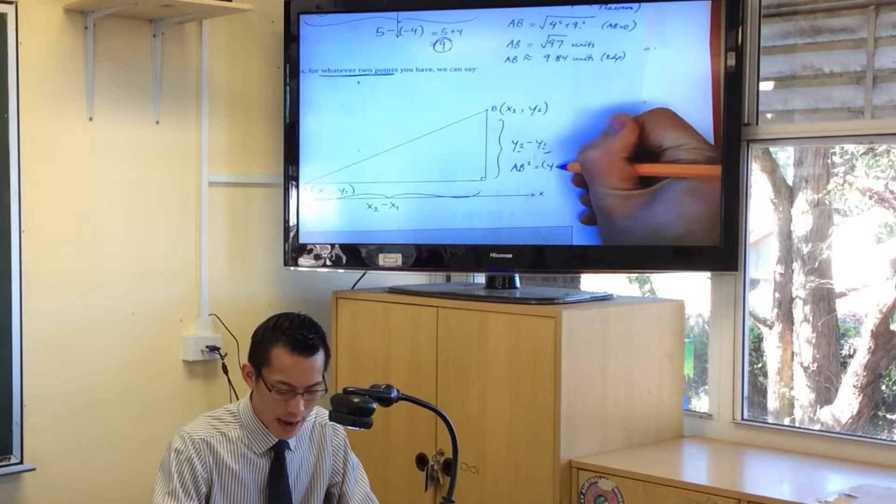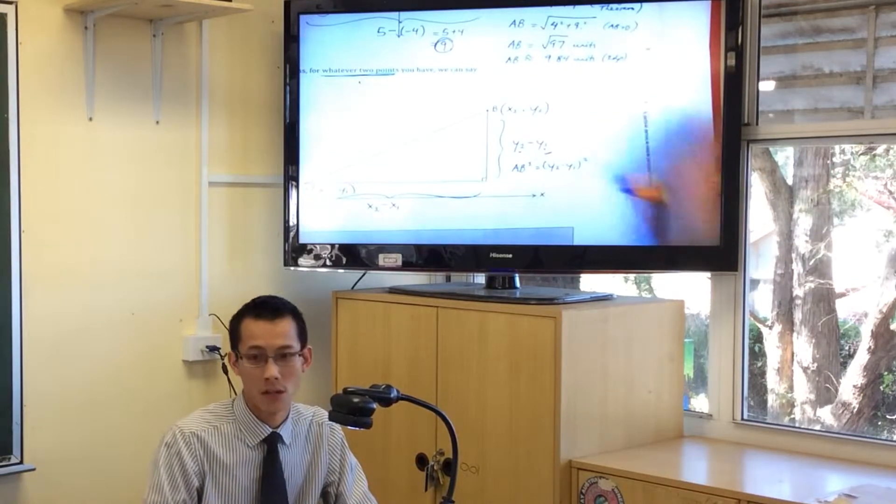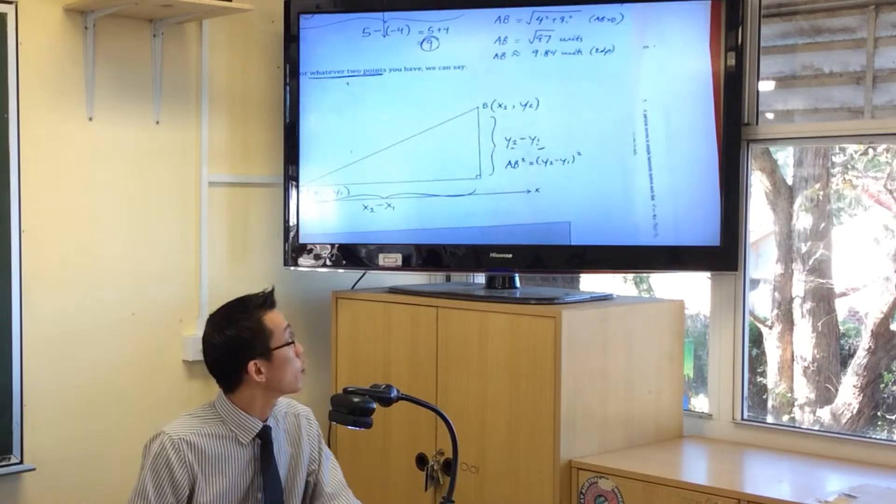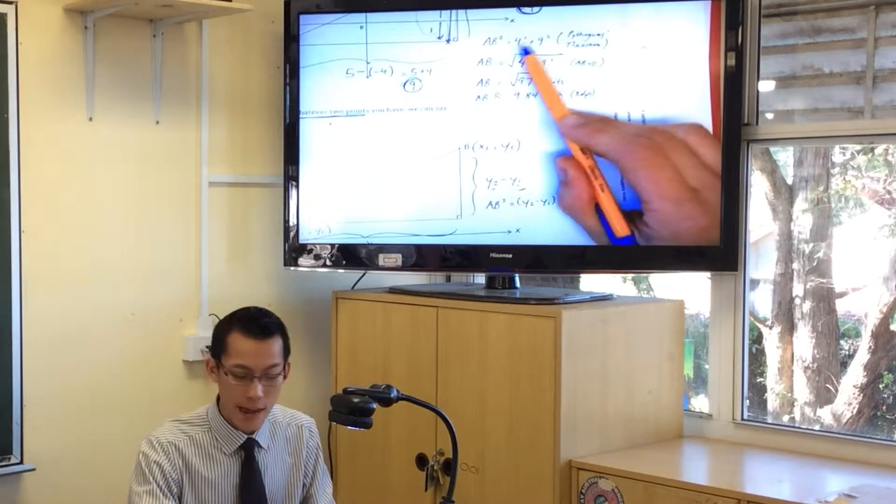So I'll write y2 minus y1, and I square the whole lot. So just look back at how we did this before. y2 minus y1, in the previous case, it gave us 4, right?